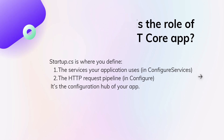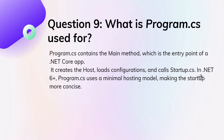Ninth question: what is Program.cs used for? Program.cs contains the Main method, which is the entry point of a .NET Core app. It creates the host, loads configuration, and calls the Startup.cs file. In .NET 6 and above, Program.cs uses a minimal hosting model, making the startup more concise.